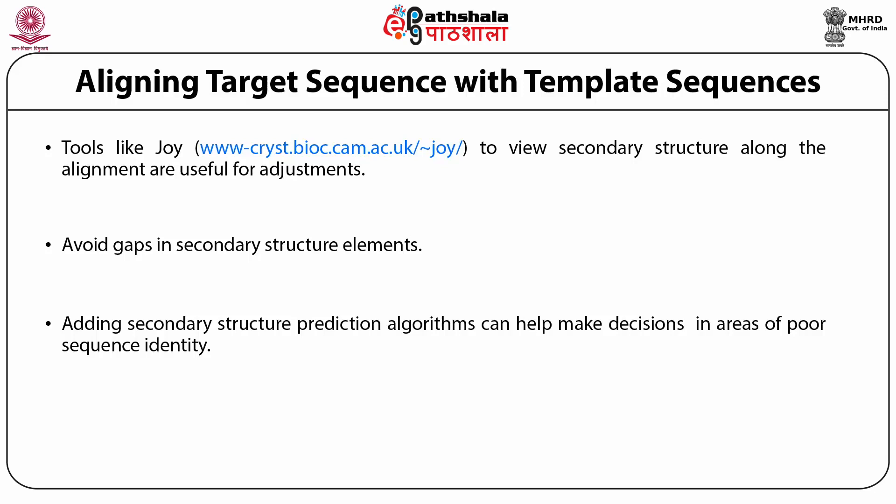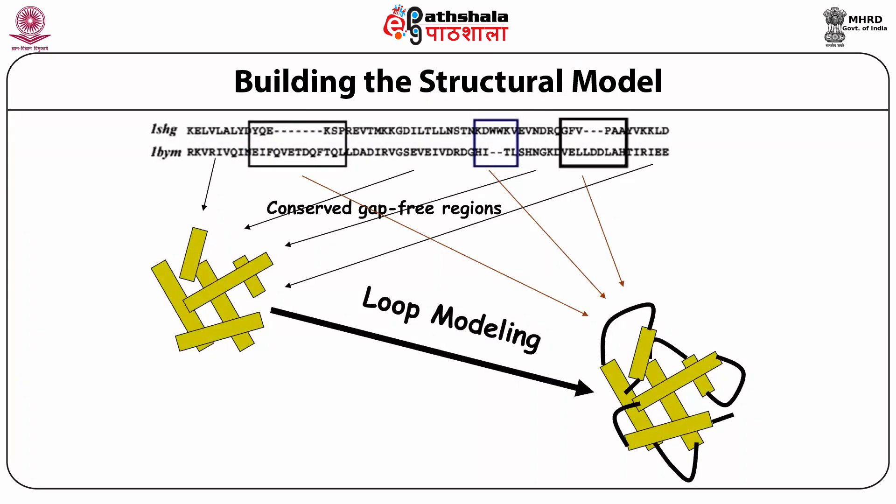You can add information by running a secondary structure prediction on both your target and your template, hoping for matching at least in the secondary structures. The process of building the model goes like this: first you align, and in regions of good alignment, you simply transfer the structure of the template onto the target. Most of the time this works in the secondary structure regions, leaving out the loops.